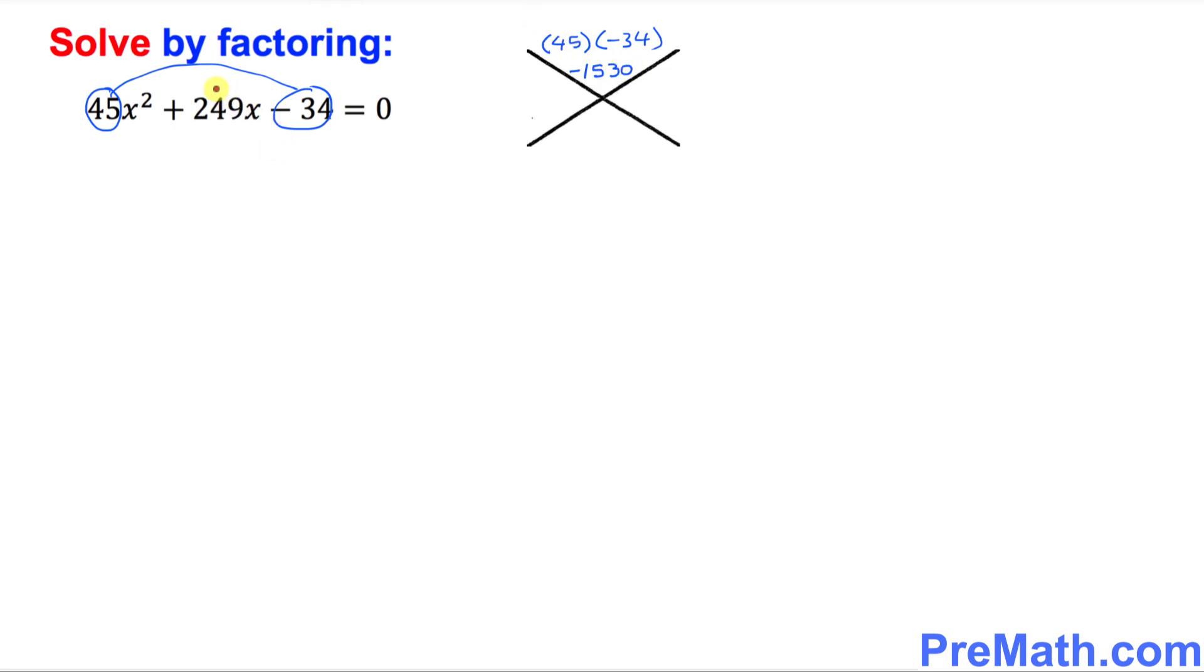And look at the middle number which is 249 positive. I want you to just write it down positive 249 over here. Our next step is to find the possible factors of 1530. Don't worry about this negative sign. What are the possible factors of 1530?